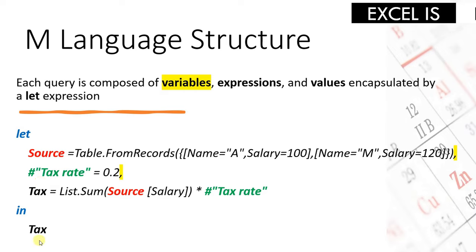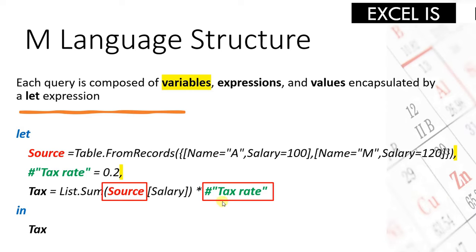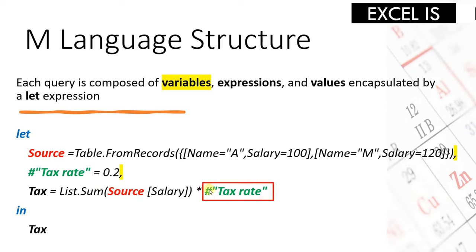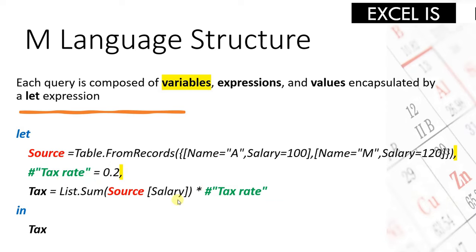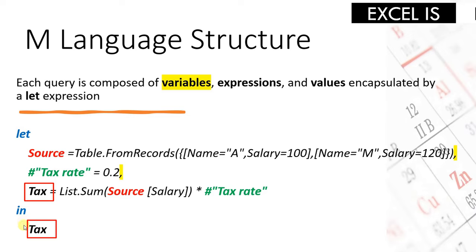The query will look at the variable after the 'in' — in this case, 'tax'. It will go back through each line and search for the tax variable, finding it in the last step. Inside the tax variable, in order to execute the code, it will see two other variables: 'source' and 'tax rate'. So it will go back to the source step and do all the calculation to reach a final value. Then it will go to the tax rate variable and calculate its final value, and finally perform the multiplication between the summation of salaries in the source table and the tax rate.